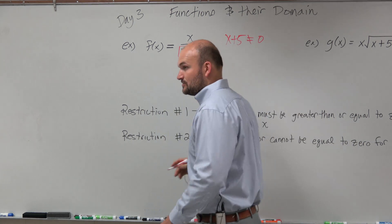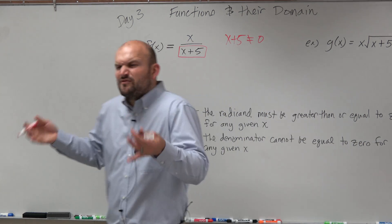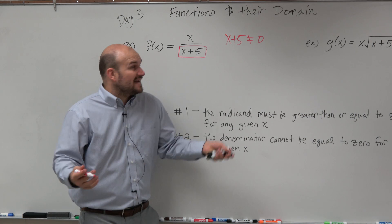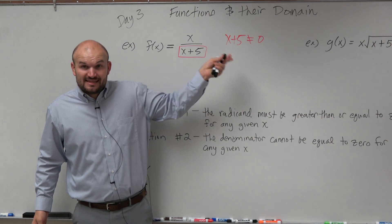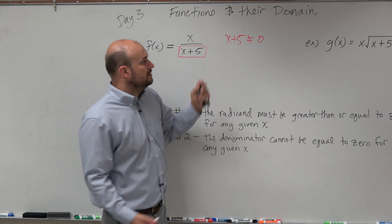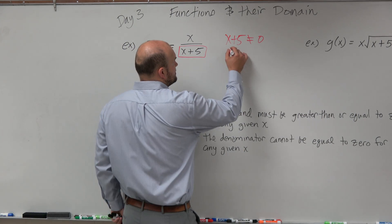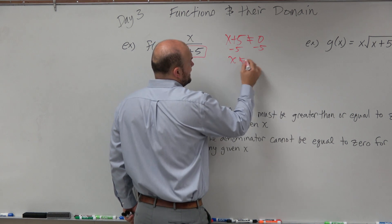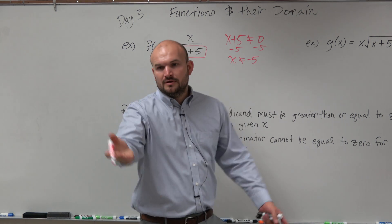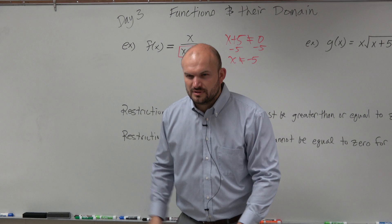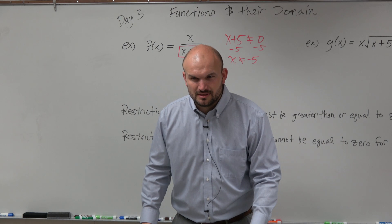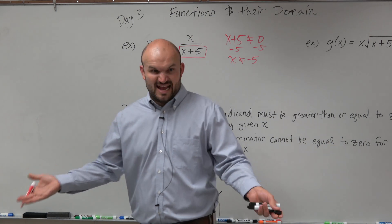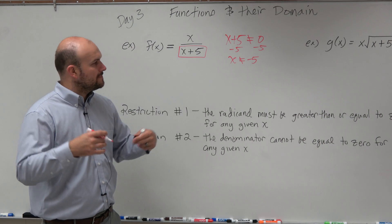x plus 5 cannot equal 0. For what values of x does that equal 0? Well, let's subtract 5 — x cannot equal negative 5, which Emily already said. Can't equal negative 5. So we're good with that.